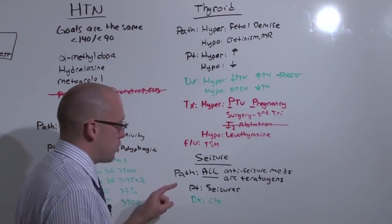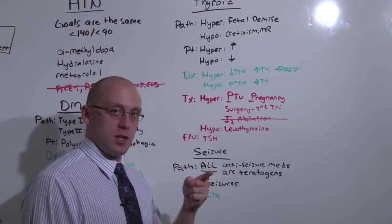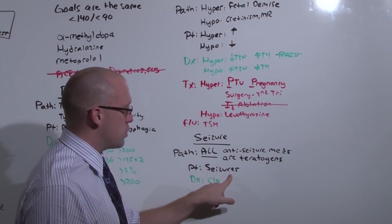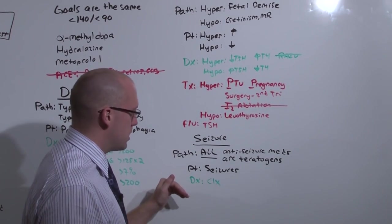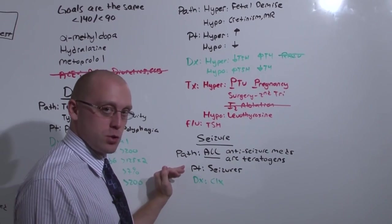Now, if you see seizures in a pregnant patient, you should first think of eclampsia. But if you know she's got a history of seizure disorder and it's early on in the pregnancy, it's probably just her seizure disorder acting up.